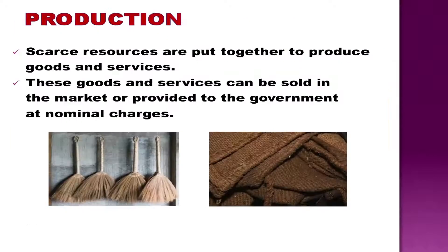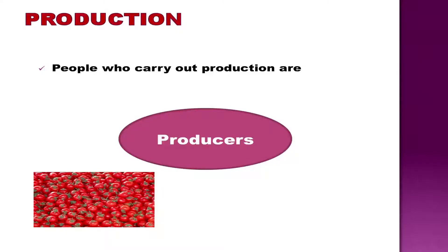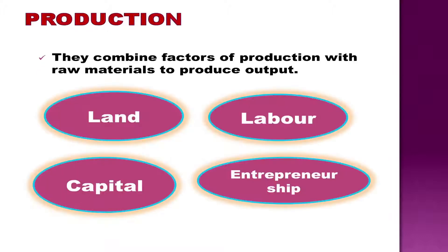Scarce resources are used in the production of goods and services with the objective of satisfying our needs and wants. The process of satisfying our needs and wants through production of goods and services is carried out by combining the factors such as land, labor, capital and entrepreneurship. Factors in return are paid rent, wages, interest and profit for their productive services.